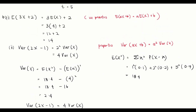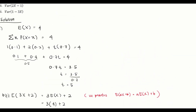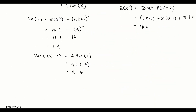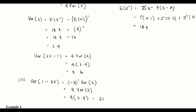For the third part, we need to find the variance of 1 − 3x. Using the property Var(ax + b) = a²·Var(X), the coefficient a here is −3, so we get (−3)² × Var(X) = 9 × Var(X) = 9 × 2.4 = 21.6.